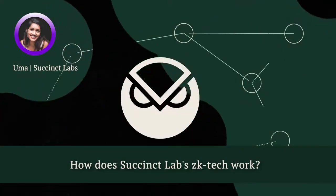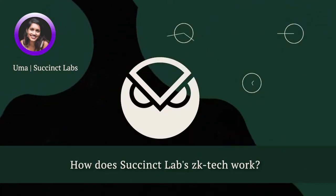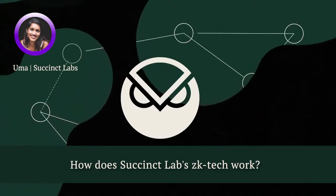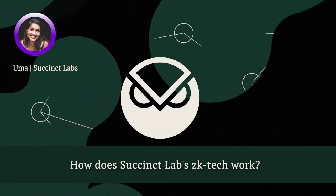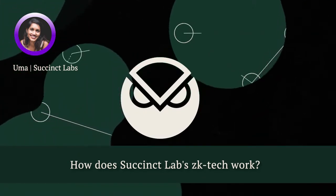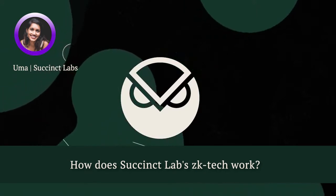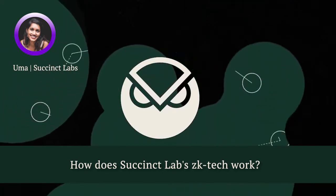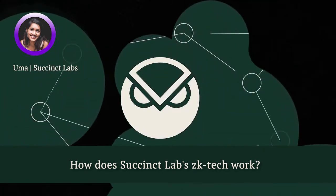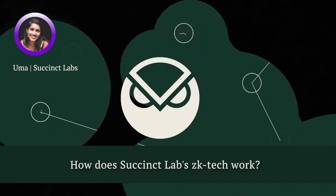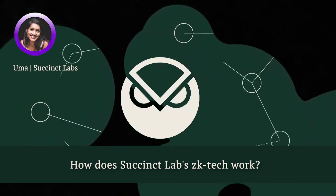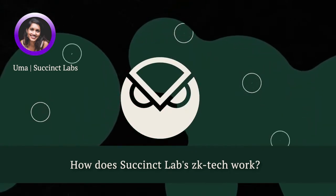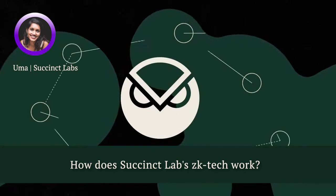There's a prover and then there's a verifier. The setup is: you have some prover who wants to prove to a verifier that they computed some function on a set of inputs, and that this particular function computed on this set of inputs has a particular output. That's a very generic setup.